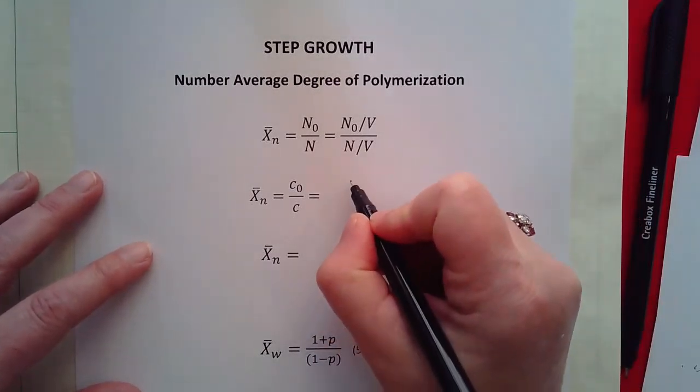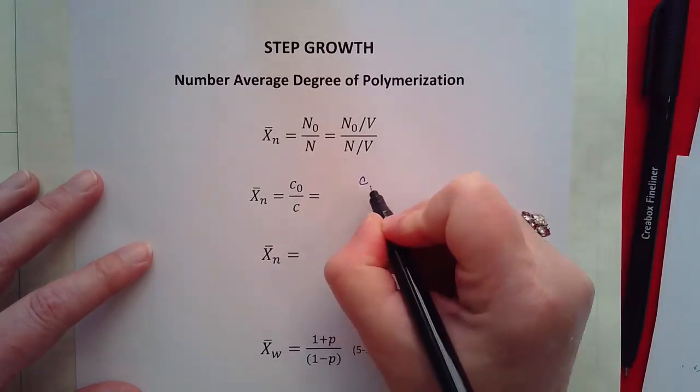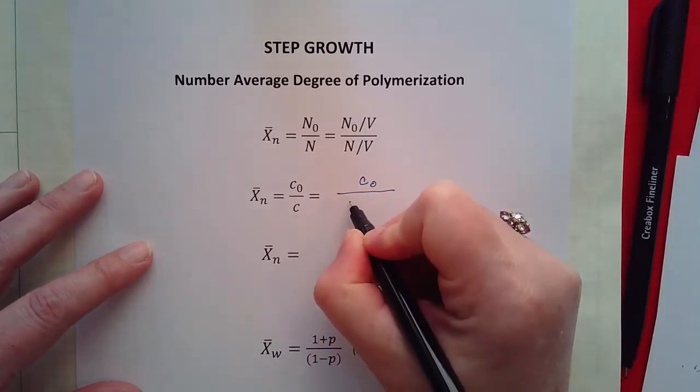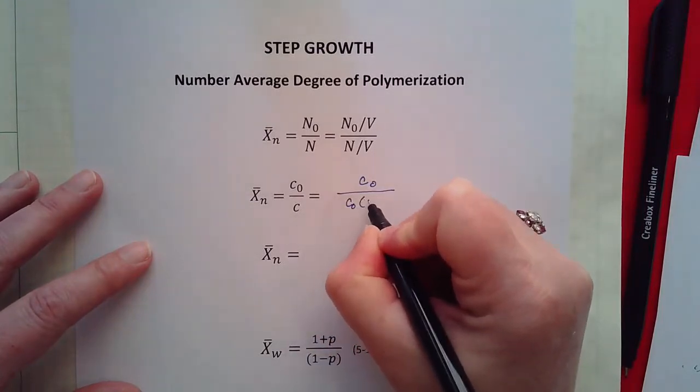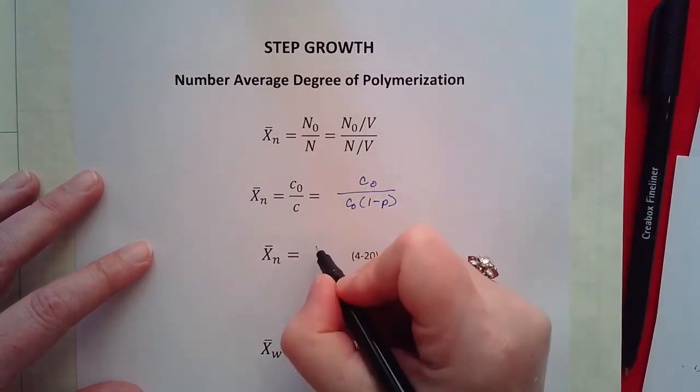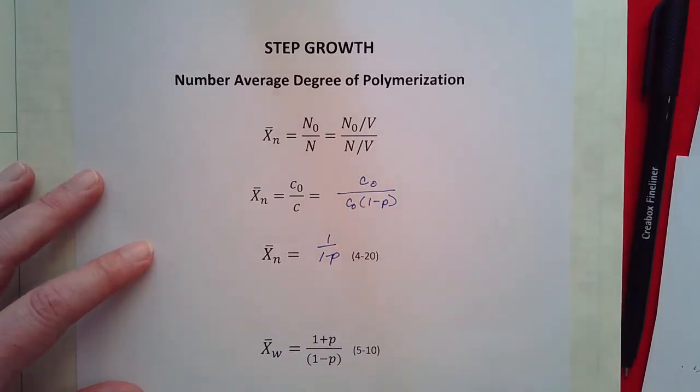And if we plug in for concentration which concentration just equals c naught times 1 over 1 minus p, c naught cancels we've got 1 over 1 minus p. It's a very straightforward derivation.